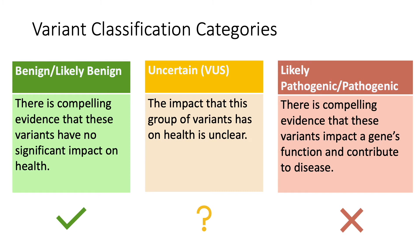A pathogenic variant may explain a patient's symptoms, increase an individual's chance of developing a specific condition, or increase the chance of having a child with a specific condition. If there is not enough information to put a variant into the pathogenic or benign categories, it is called a variant of uncertain significance, or VUS.